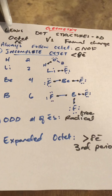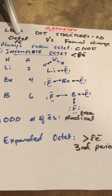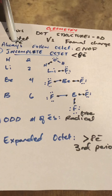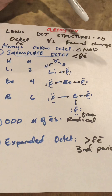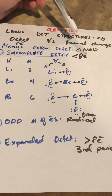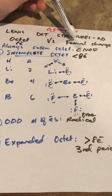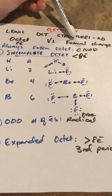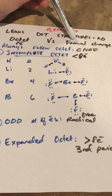In order to draw the correct Lewis dot structure, we follow two rules. The first is the octet rule, which says you have to have eight electrons surrounding every atom. The second rule is formal charge. With formal charge, we try to get an ionic charge of zero. If we're unable to get zero, we try to minimize the charges as much as possible.